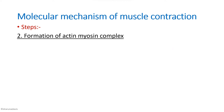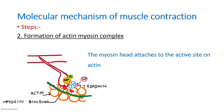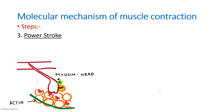The next step is formation of the actin-myosin complex. The myosin is already in a perpendicularly extended position, and now that calcium has bound, the myosin binding site is uncovered. So now the myosin head can bind to the actin filaments — that is the second step, the binding of myosin head to actin filaments.